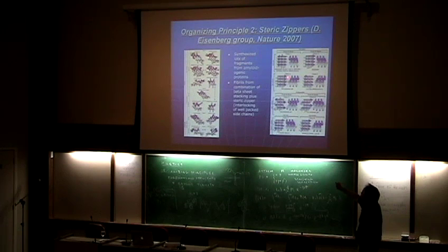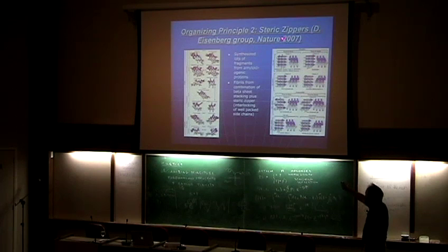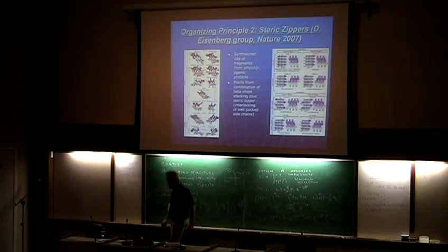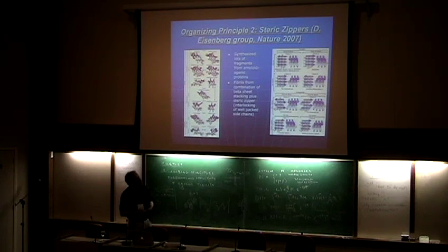You can do the same thing for anti-parallel beta sheets. He's actually observed some of these in his experiments, but has not yet observed others. So eight different kinds of aggregates you can get out. It's a very interesting principle. You get beta sheet formation and you get the steric zipper at about the same time - it isn't clear which comes first.